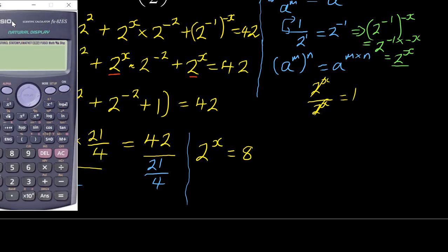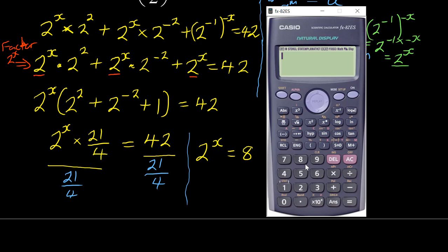As a caution, avoid entering two consecutive division signs such as 42 over 21 over 4, because that will give you a wrong answer of 1 over 2. Make sure 42 is your numerator and 21 over 4 is your denominator, then you'll correctly get 8.